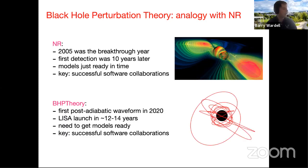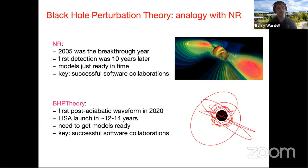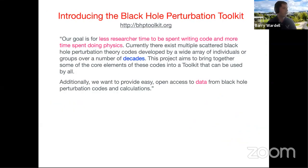Black hole perturbation theory is perhaps 10 to 20 years behind numerical relativity in terms of community organization. We're hoping to have the first post-adiabatic waveform in 2020, comparable to the 2005 milestone in numerical relativity. LISA is roughly 10 to 15 years away, and just like with numerical relativity, that first waveform will be for the simplest possible case — a quasi-circular orbit in Schwarzschild with no spins, no precession, no eccentricity. Successful software collaborations will be needed, and that's where the Black Hole Perturbation Toolkit enters.